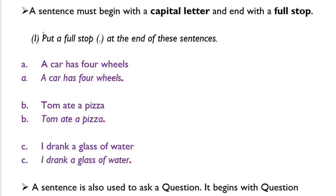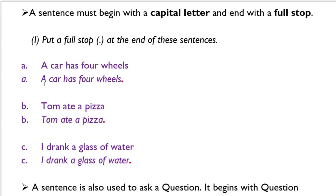Exercise number 1. Put a full stop at the end of these sentences. A: A car has four wheels. Notice that A is the first letter of the sentence, which is why it is a capital letter. This sentence ends with a full stop. B: Tom ate pizza. T is capital and the sentence ends with a full stop. C: I drank a glass of water. I is capital and the sentence ends with a full stop.